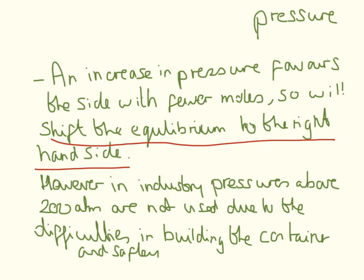However, in industry, pressures above 200 atmospheres are not used due to the difficulties in building a container and safety. So if we had an even higher pressure, it would shift the equilibrium even more to the right-hand side, but it would be a greater chance of exploding, which would be dangerous.